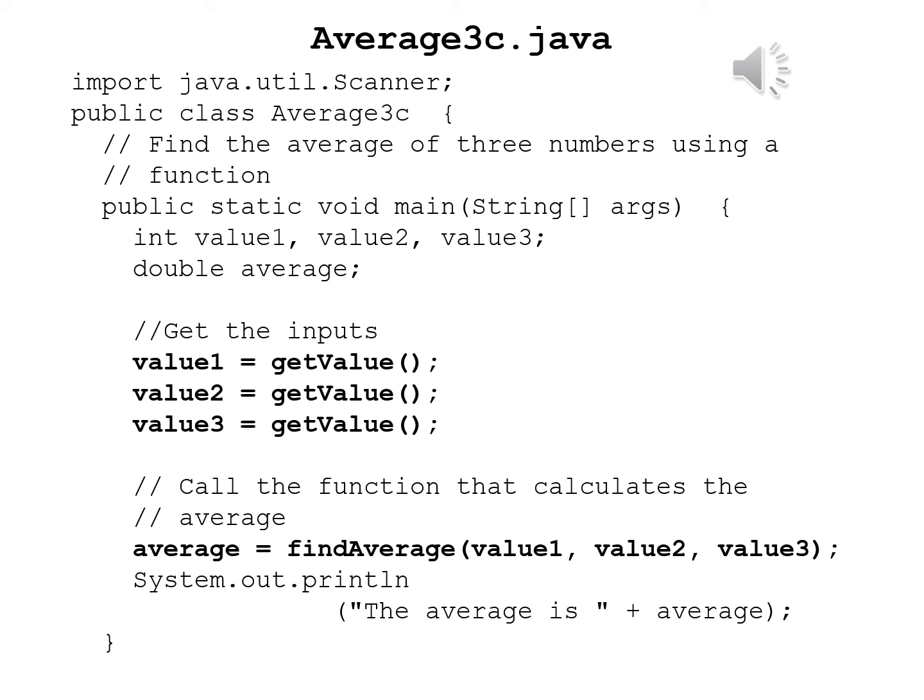We begin with import java.util.Scanner. The header for the class is public class Average3C open brace. Again, we have the comment find the average of three numbers using a function. Now we have the header for the main method, public static void main inside parentheses string open close bracket args, and after the close parentheses an open brace.